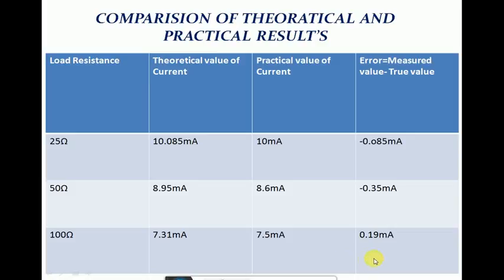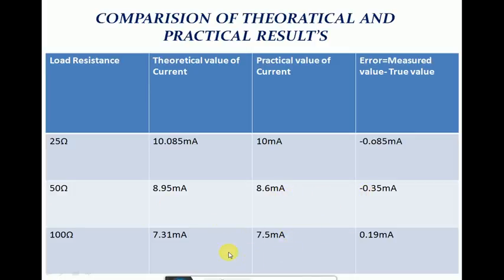Whenever we talk about error, another quantity comes into the picture known as the correction factor. The correction factor is the amount that must be added or subtracted from the measured value to get the true value. Here, the measured value is the practical value and the true value is the theoretical value. When load resistance is 25 Ω, the practical value is 10 mA and the theoretical value is 10.085 mA — since the error is negative, it must be added to the practical value to get the true value. The same applies for 50 Ω and 100 Ω. Thanks for watching and please subscribe.